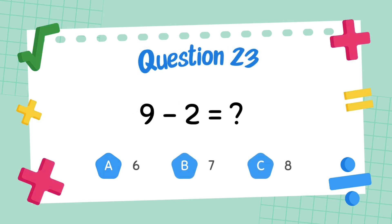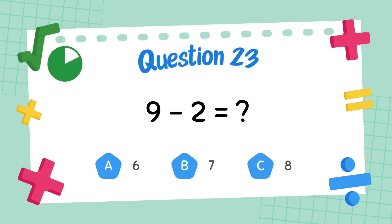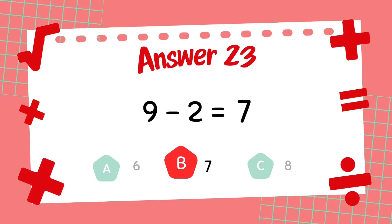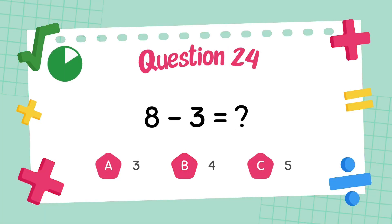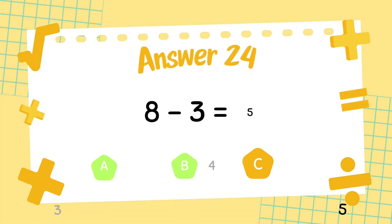What is 9 minus 2? The answer is 7. What is 8 minus 3? The answer is 5.